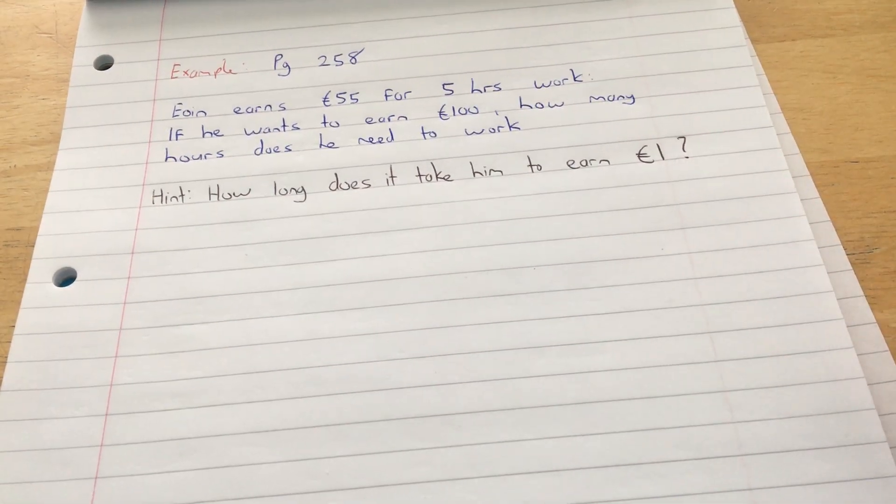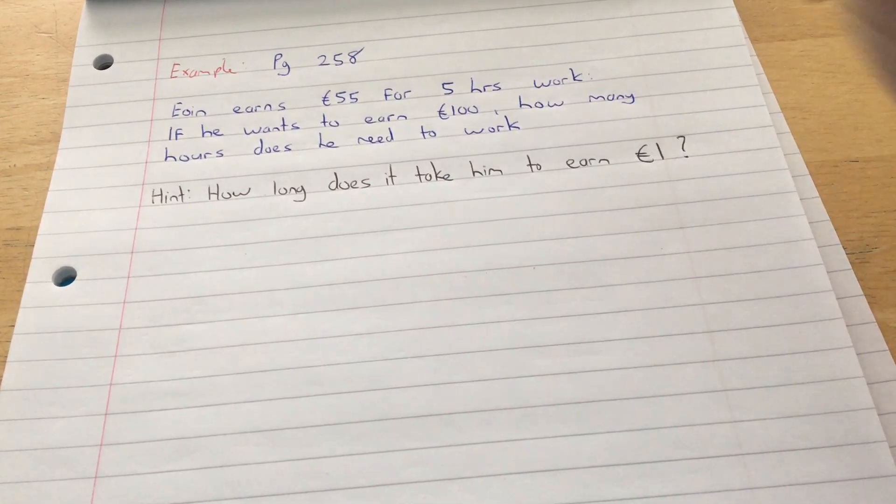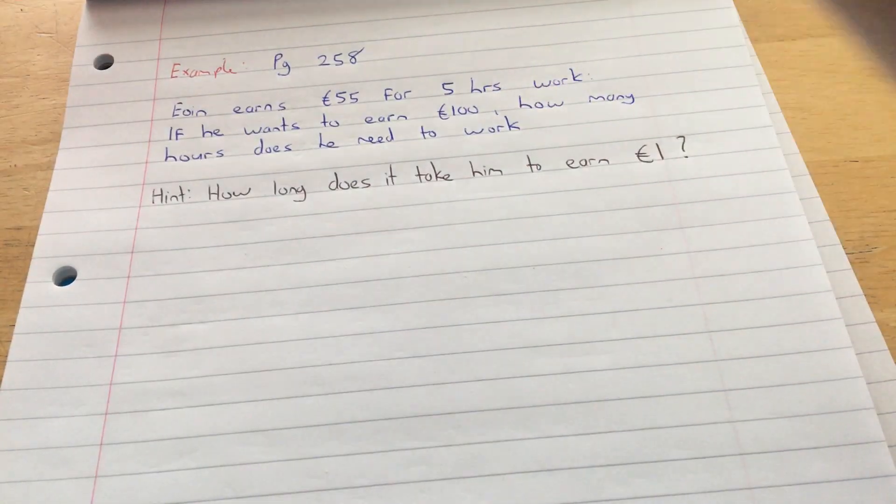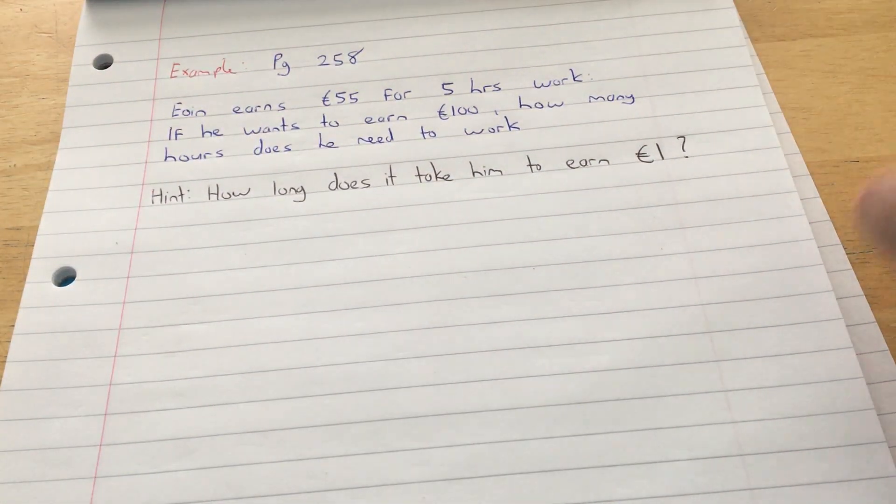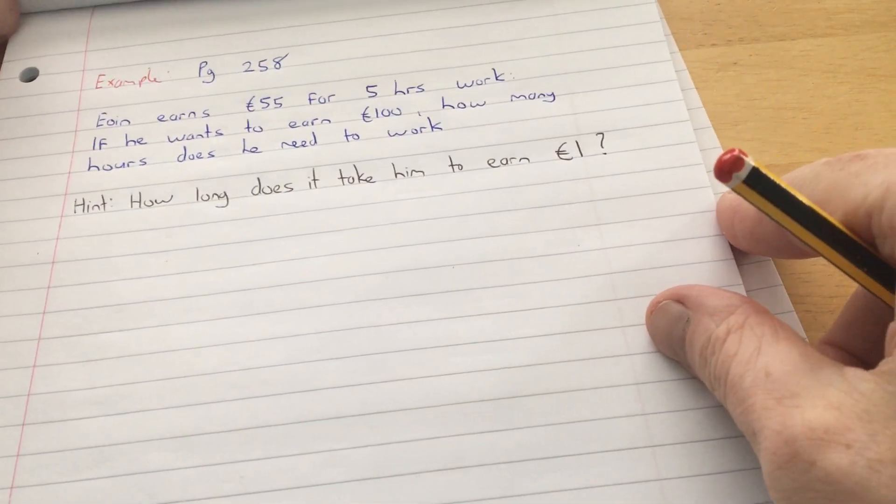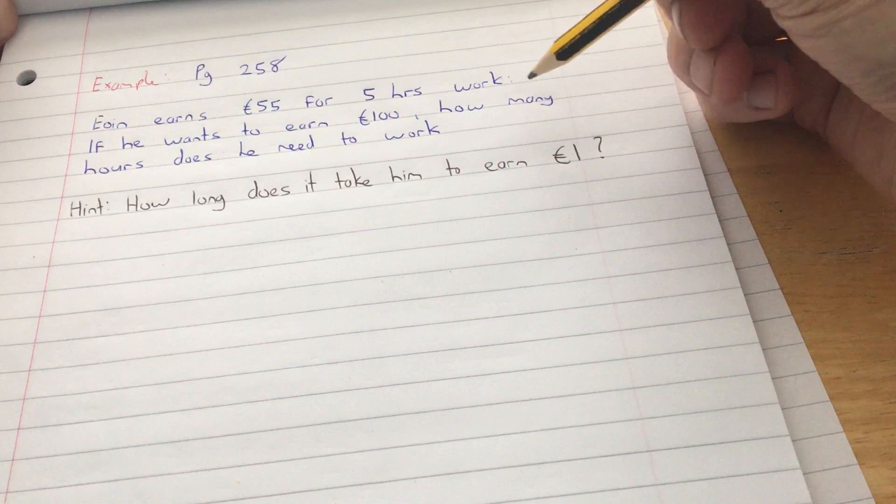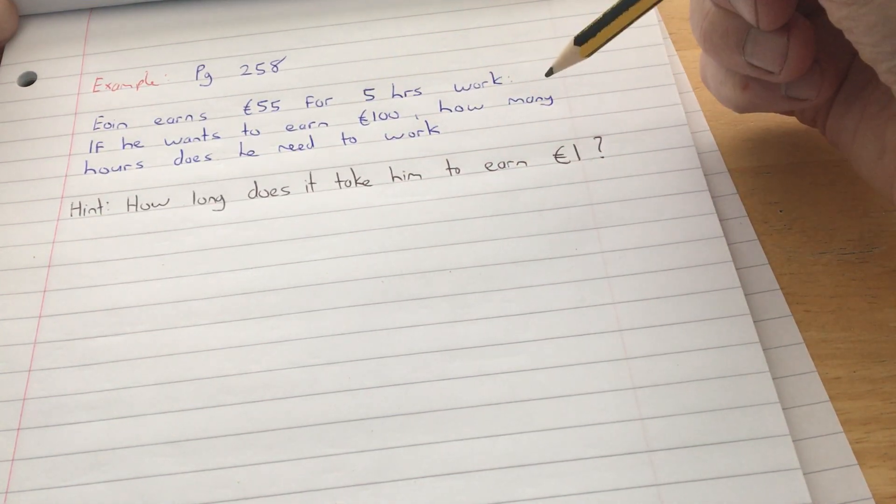This proportion question is a bit more difficult and it's an example in your book. Owen earns 55 euro for 5 hours of work. If he wants to earn 100 euro, how many hours does he need to work?